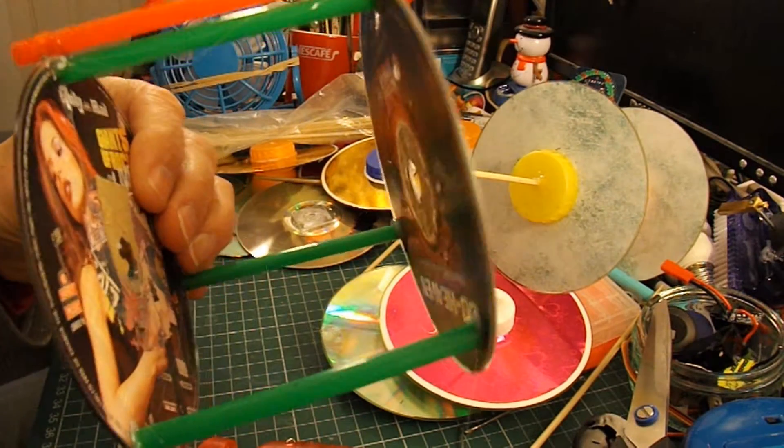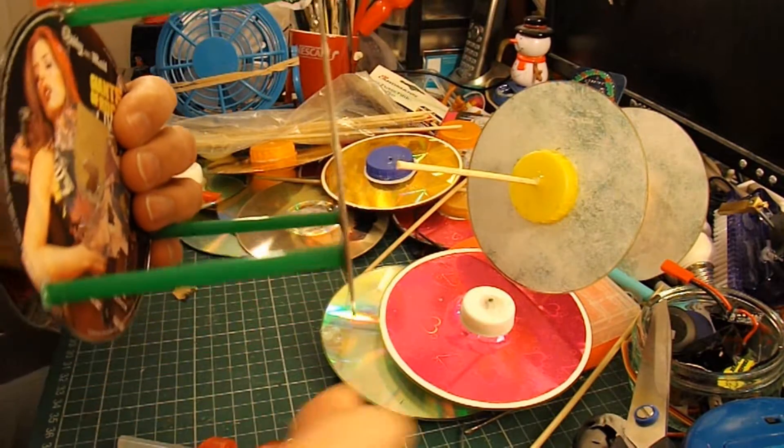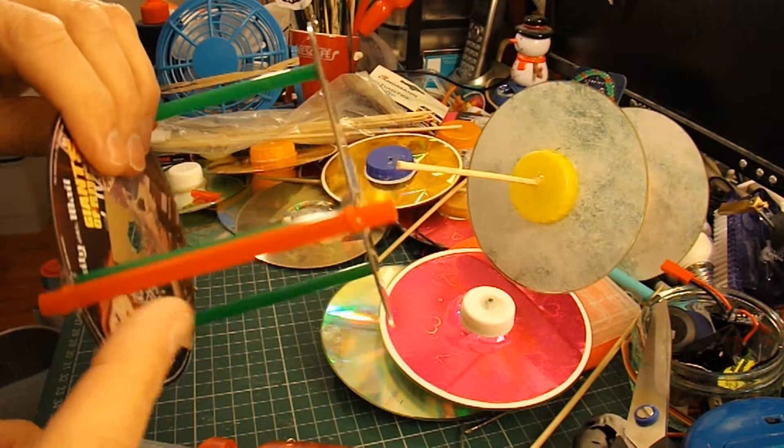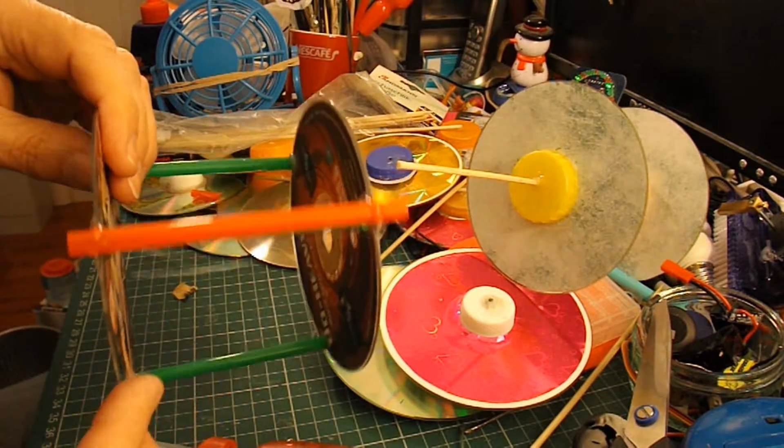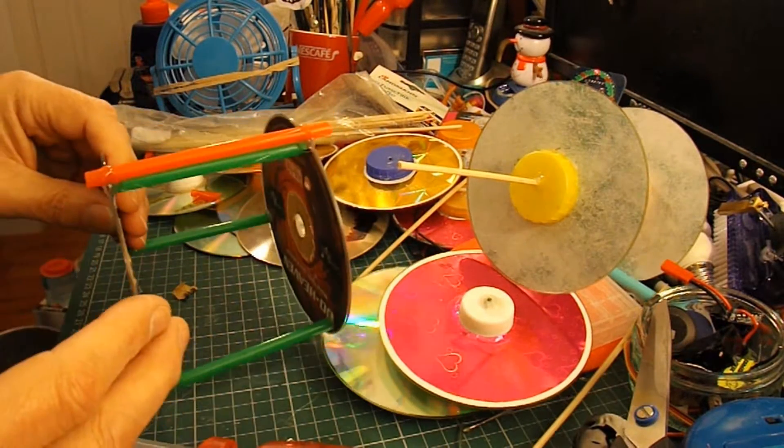So I've got some drinking straws between those CDs, just to hold them in position. Then the red drinking straw will be the front axle tube, when the hot glue's cooled down a little bit.